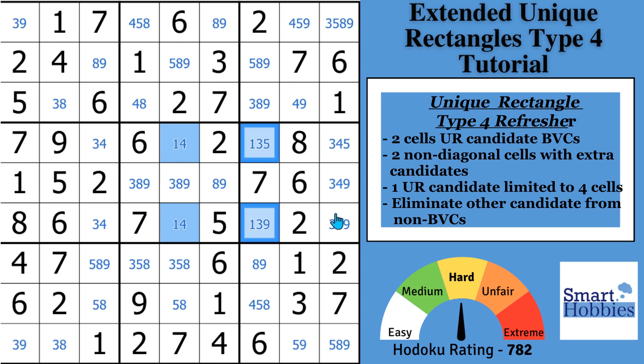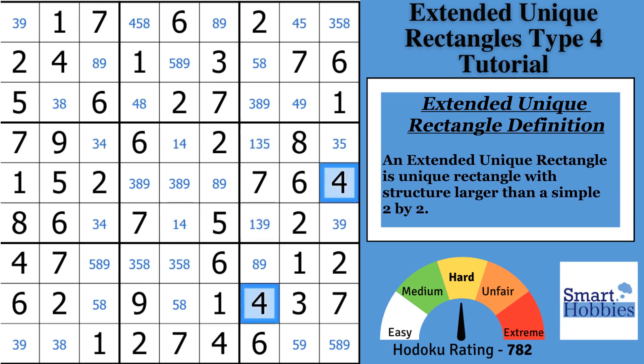Let's apply that now to the extended unique rectangle Type 4. I'll move back to the original puzzle. Okay, the 4s are back. They're set. Okay, what you want to do, remember, define a unique rectangle.